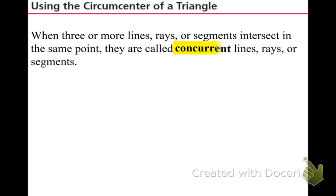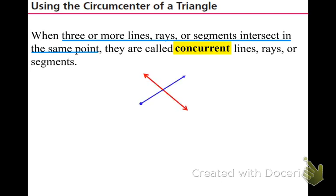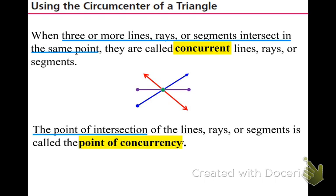To begin, we talk about a vocabulary word — it is your fill-in-the-blank. When one, three, or more lines, rays, or segments intersect in the same point, that is called concurrent. You will hear this word a lot in the next few lessons. The point of intersection of all of these lines, rays, and segments is called the point of concurrency. We're learning two points of concurrency today, called a circumcenter and an incenter.